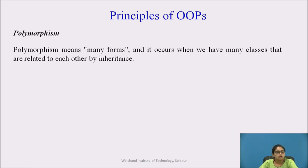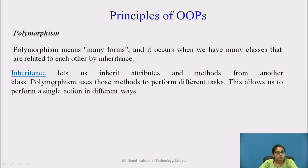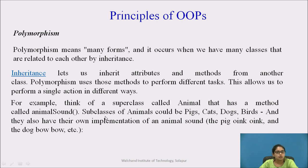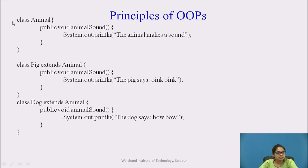Next is polymorphism. Polymorphism means many forms. It occurs when we have many classes that are related to each other by inheritance. Polymorphism uses methods to perform different tasks, allowing us to perform a single action in different ways. For example, with a superclass Animal and subclasses like pig, cat, dog, and birds, you can write a program to capture the sounds of animals. Each subclass such as Pig and Dog will extend from the Animal class, demonstrating inheritance via the extends keyword, while each class implements its own version of the sound method.